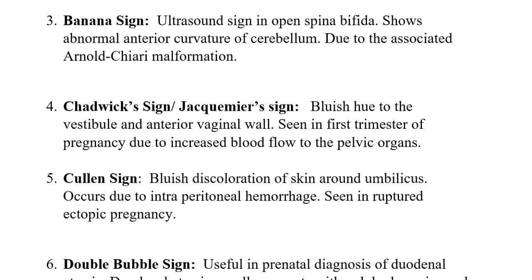Banana sign is seen in open spina bifida. It shows abnormal anterior curvature of the cerebellum due to the associated Arnold-Chiari malformation. Chadwick sign is also called Jacquier sign — it is a bluish hue due to increased blood flow in the pelvic organs during pregnancy, seen in the vestibule and anterior vaginal wall.